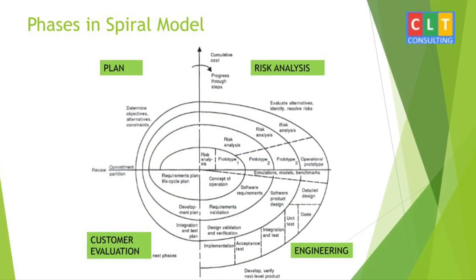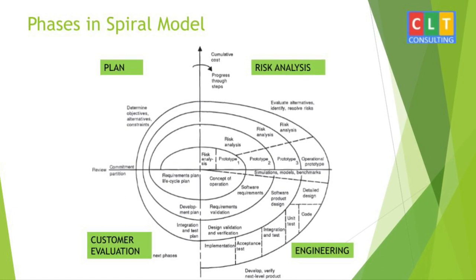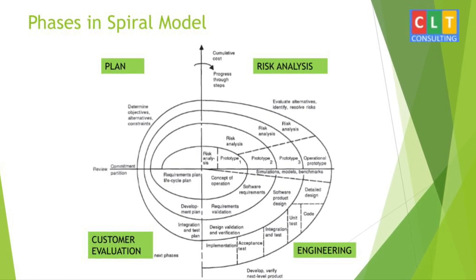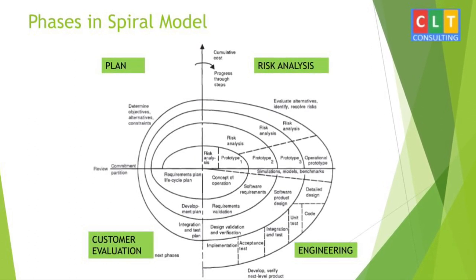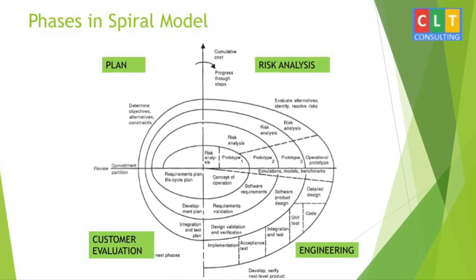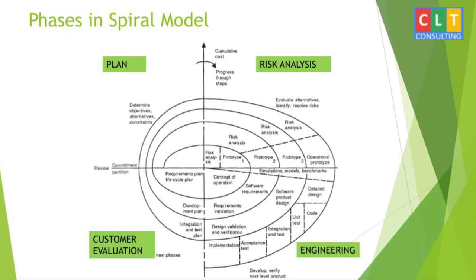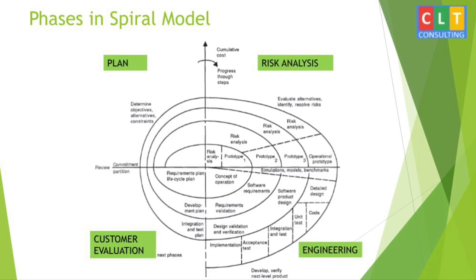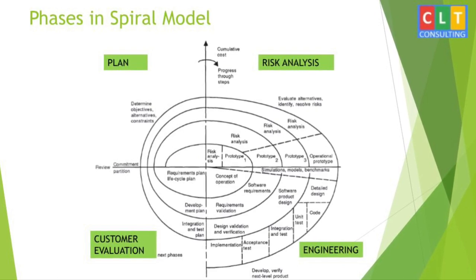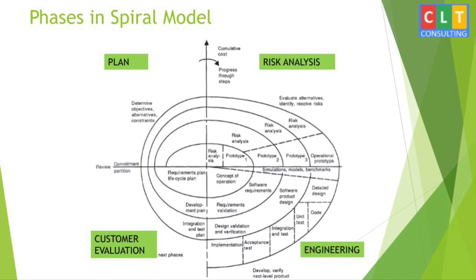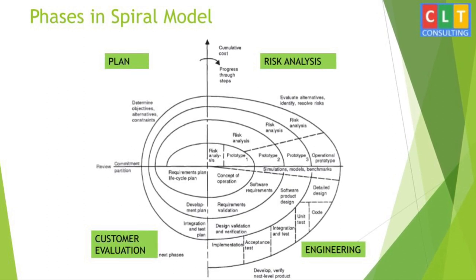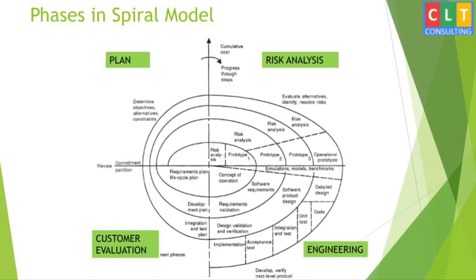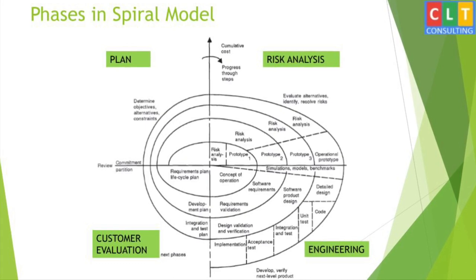Here is the structure of the Spiral Model — it looks like a spiral, which is why it is called the Spiral Model. It contains many loops; the exact number of loops is unknown and can vary from project to project. Each loop is called a phase of the software development process. The model is divided into four quadrants, also called phases: Plan, Risk Analysis, Engineering, and Customer Evaluation. The radius of the spiral at any point represents the expenses of the project.